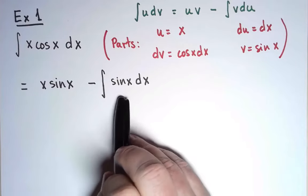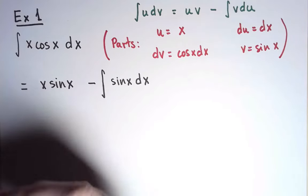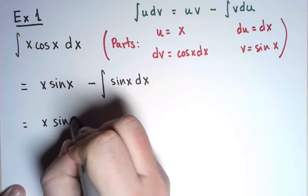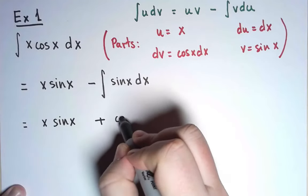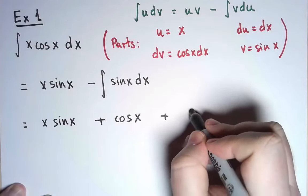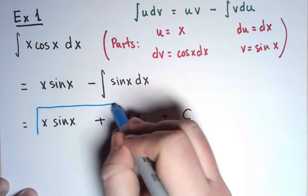Actually, I know how to solve this new integral. An antiderivative of minus sin x is simply cos x. Don't forget the integration constant, and that's my final answer.